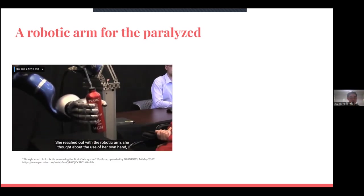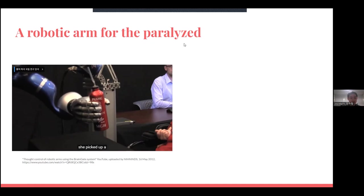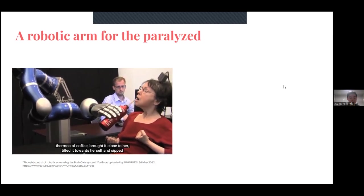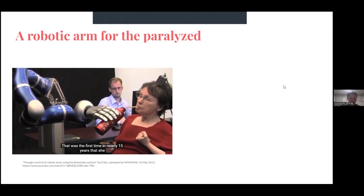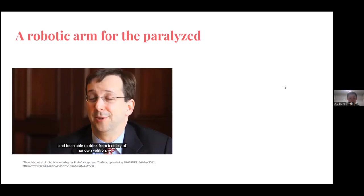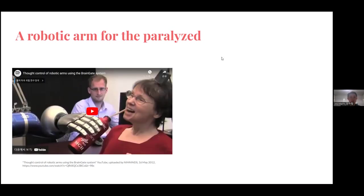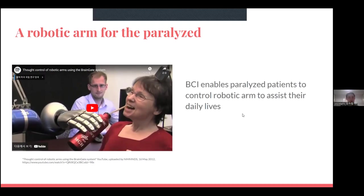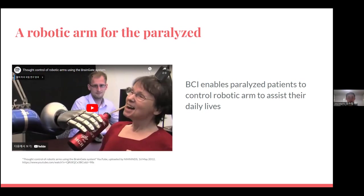She reached out with the robotic arm, thought about the use of her own hand, picked up that thermos of coffee, brought it close, tilted it, and sipped from a straw. That was the first time in nearly 15 years she had picked up anything and been able to drink from it solely of her own volition. This technology really gives hope to people with paralysis.